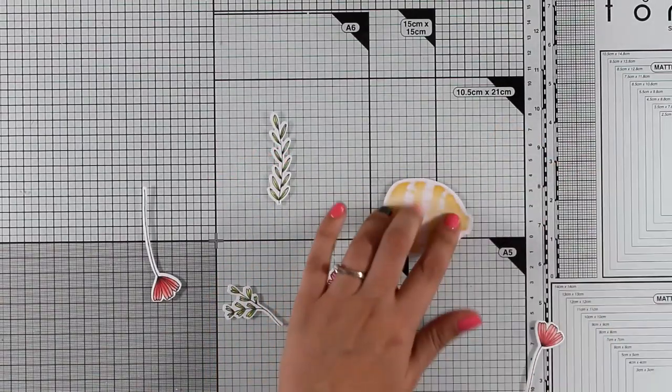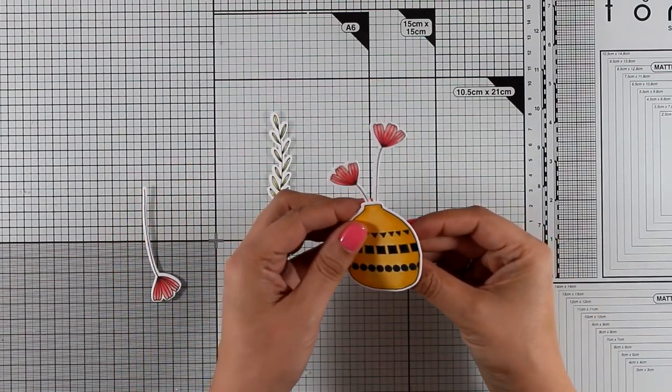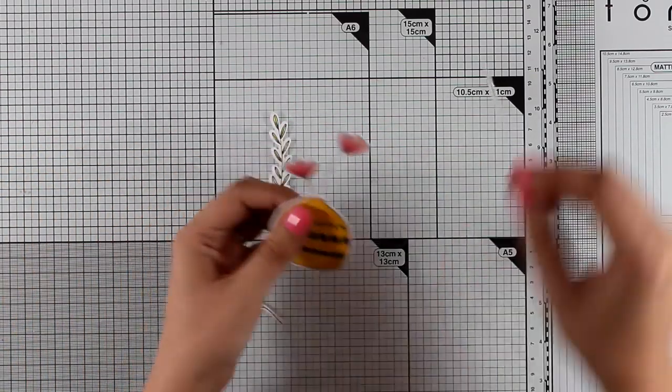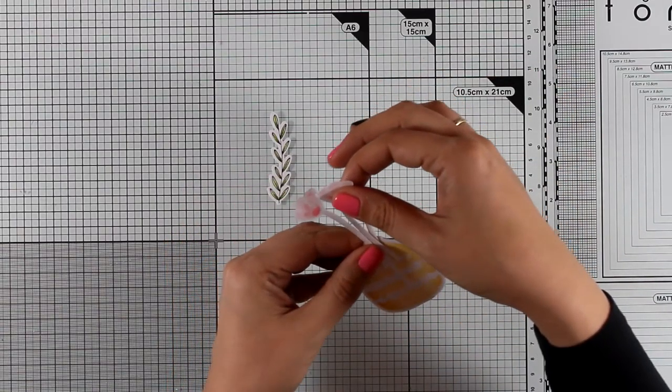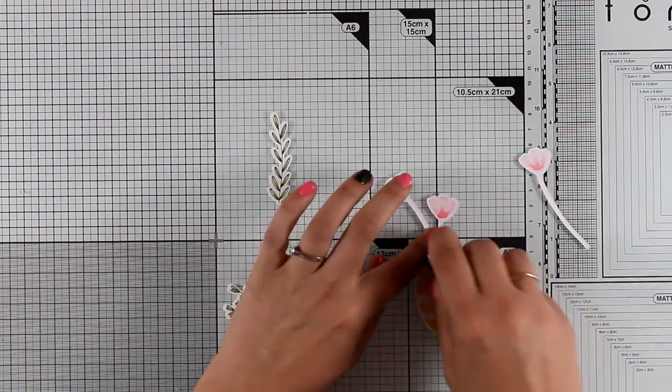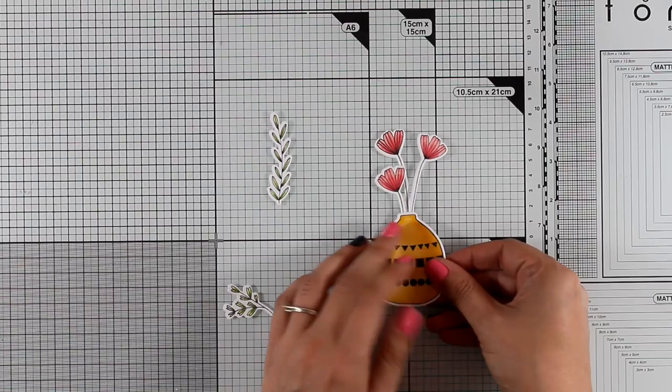Now I'll add some tape adhesive at the back of my vase so that I can play around with my flowers and decide where everything is going to go. I'm going to stick the three flowers inside the vase, and I need to add a little bit of tape adhesive there just to secure my third flower.